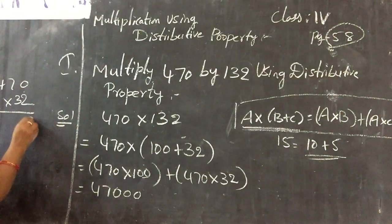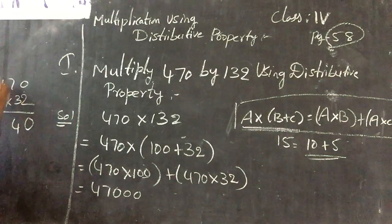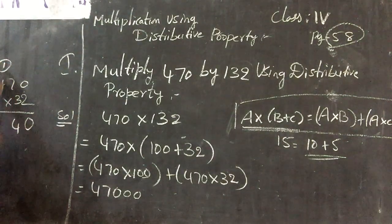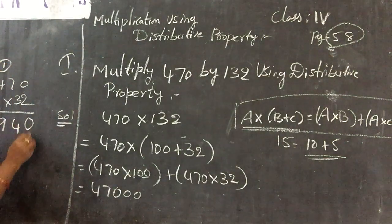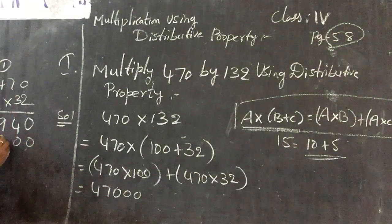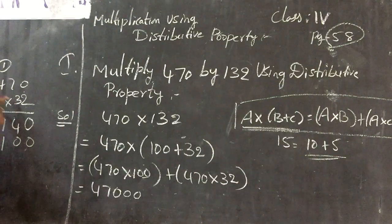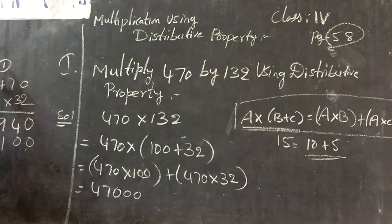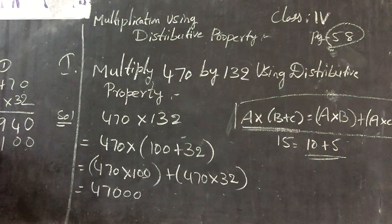Do the multiplication. 2 into 0 is 0. 2 sevens are 14, 1 is reminder. 2 fours are 8 plus 1 is 9. So ones place completed. 3 into 0 is 0. 3 sevens are 21, 2 is reminder. 3 fours are 12, 12 plus 2 is equal to 14.